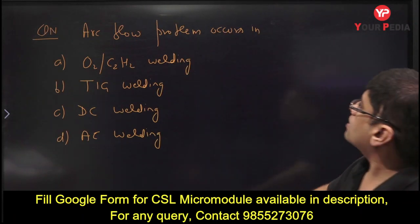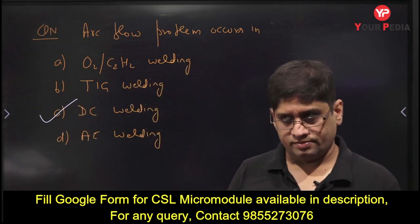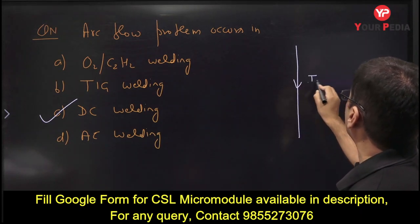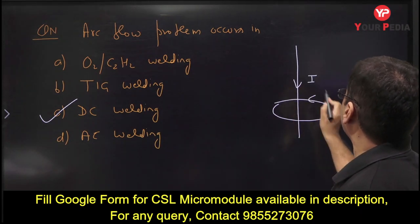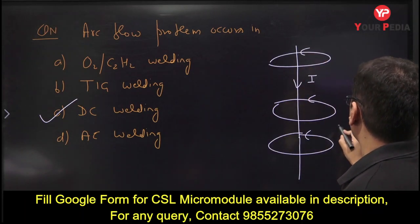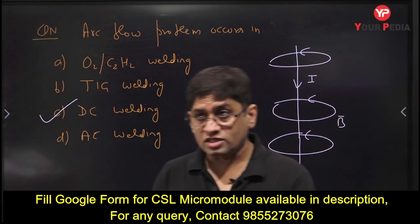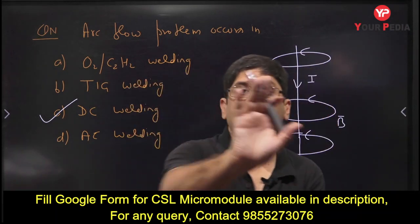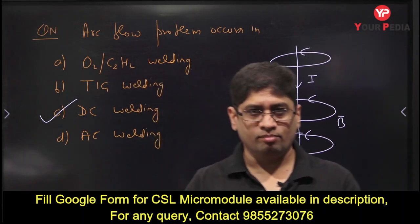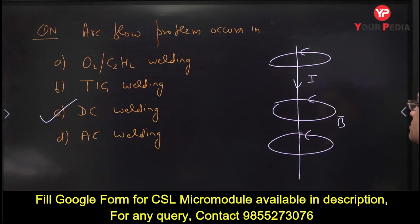Arc blow occurs in DC welding. When current flows through the electrode, a magnetic field is generated around the current-carrying conductor. This magnetic field applies a magnetic force on the molten metal, causing small particles of molten metal to be thrown out onto the workpiece — this is called spattering. Arc blow and spattering are associated with DC welding supply.